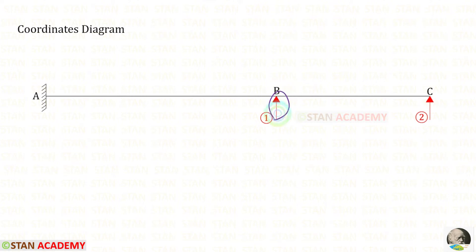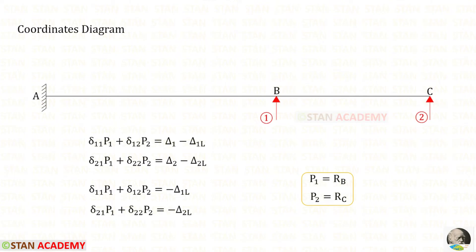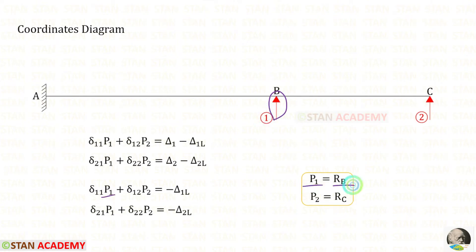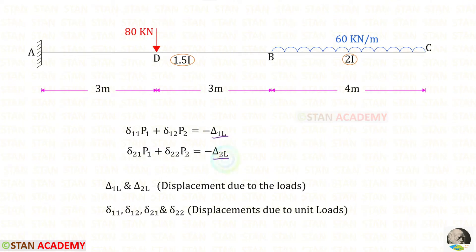Now let us draw the coordinates diagram. Let us keep RB as the first coordinate and RC as the second coordinate. To find RB and RC we have to use two compatibility equations. Since there is no sinking or settlement at supports B and C, delta 1 and delta 2 will be zero. P1 will be RB and P2 will be RC. Delta 1L and delta 2L are the displacements due to the loads, and the remaining four terms are displacements due to unit loads. Since we have released only vertical reactions, these displacements will be deflections.